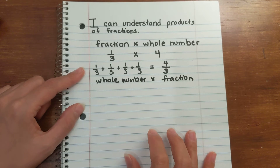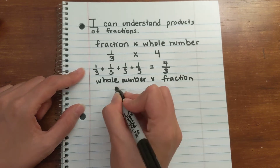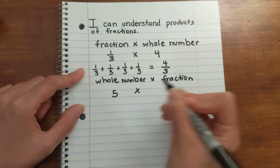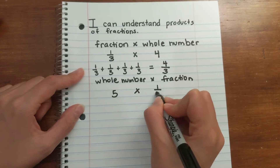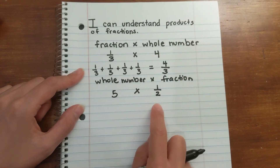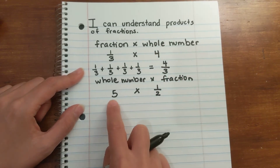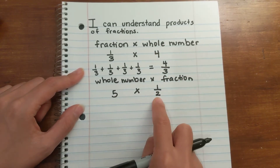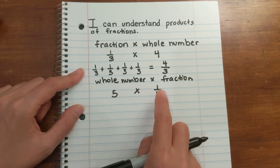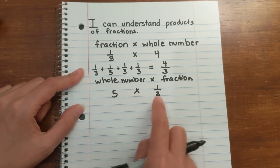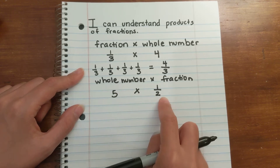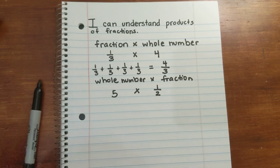Or you can look at it as a whole number times a fraction. Let's mix it up and choose different numbers — the whole number can be 5 and the fraction can be 1/2. So a whole number times a fraction is the same idea: five groups of one half, or one half five times.